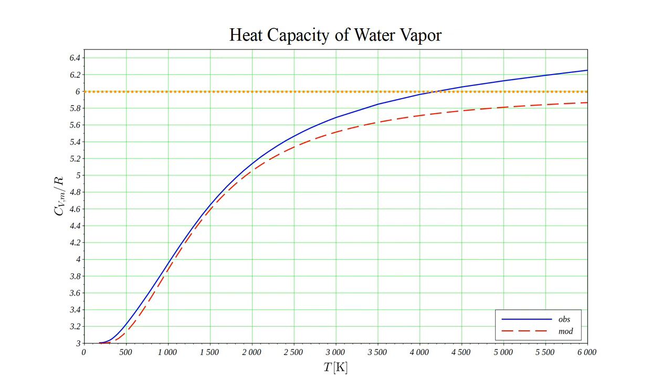Comparing our model to the observed values, we see that it gives fairly accurate results, except for very high temperatures. There, the model flattens out towards the value six r, while the observed values pass through six r at a bit more than four thousand Kelvin and continue to increase beyond that.